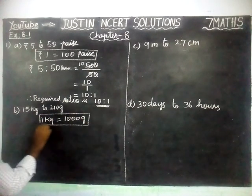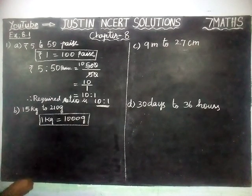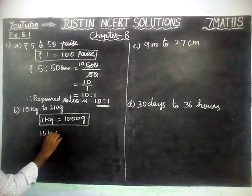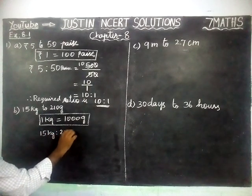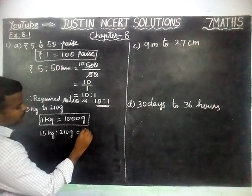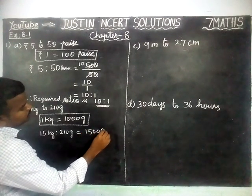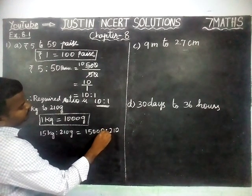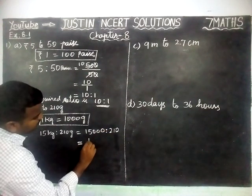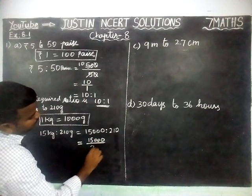1 kilogram is equal to 1000 grams. Now we are going to convert. 15 kilogram to 210 gram. So 15 kilogram is to 210 gram is equal to 15 into 1000, which gives 15,000, divided by 210 gram.